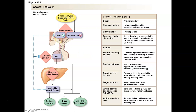Growth hormone is controlled by a hypothalamic hormone. Stimulation is controlled by GHRH — growth hormone releasing hormone — which uses the hypophysial portal system to reach the anterior pituitary and trigger growth hormone release. Inhibition comes from a hypothalamic hormone called somatostatin, also called GHIH or growth hormone inhibiting hormone, which circulates through the portal system and inhibits growth hormone release. So stimulation is by GHRH and inhibition is by GHIH, or somatostatin.